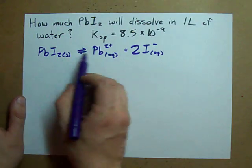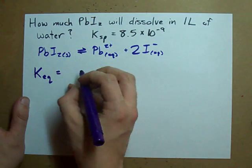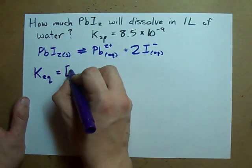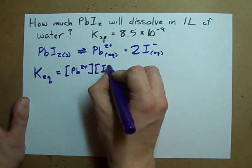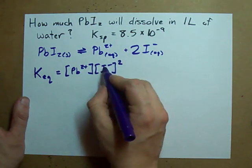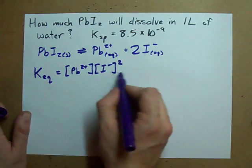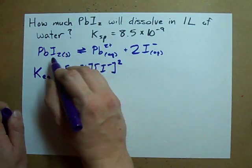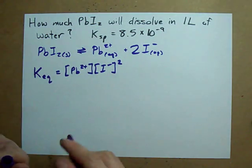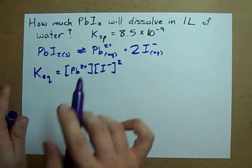Given this equilibrium, we can come up with our equilibrium expression. Products over reactants. Products, notice this is squared because there's a 2 in front here, over reactants. But we don't include this because it's a solid, and you don't include solids and liquids in your equilibrium expressions, only gases and aqueous compounds.